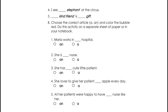Let's answer the next activity. Choose the correct article A or AN and color the bubble red. Do this activity here in the module — just color the circle red. Number 1: Maria works in blank hospital — AN or A? Number 2: She is blank nurse. Number 3: She is blank cute little patient. Number 4: She loves to give her patient blank apple every day. And Number 5: All her patients were happy to have blank nurse like her.